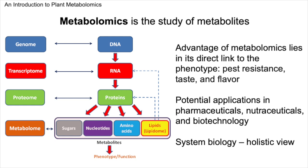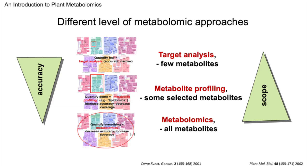It adds a dynamic layer reflecting real-time biochemical activity, and when combined with other omics, it helps build a comprehensive model of cellular processes. This slide presents the various levels of metabolomic approaches. These methods range from highly focused to comprehensive, each with its unique balance of accuracy and scope. At the precise end, we have target analysis, which is like using a high-powered lens to look at a few selected metabolites with great detail.